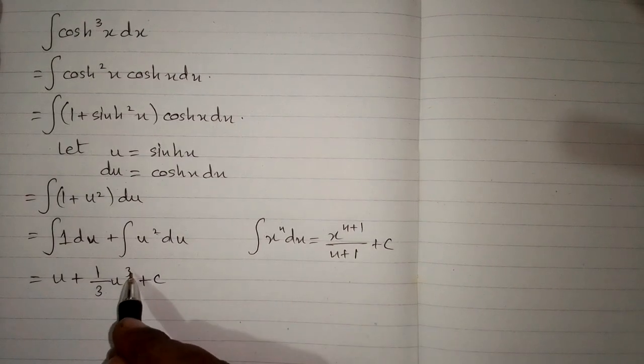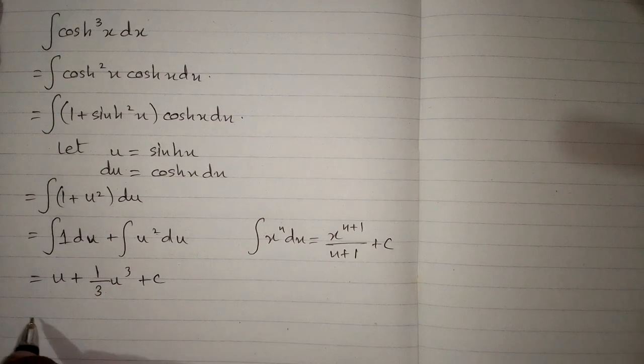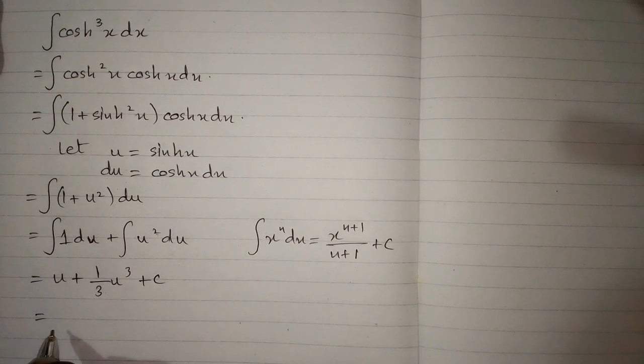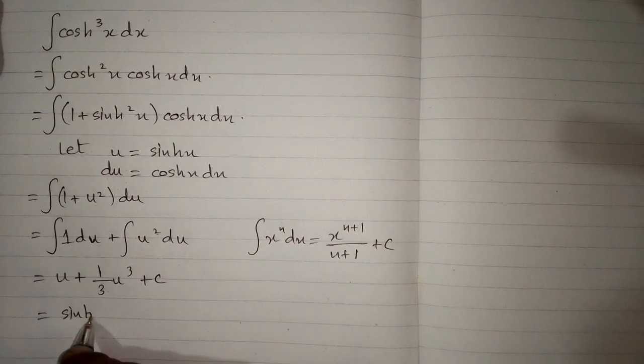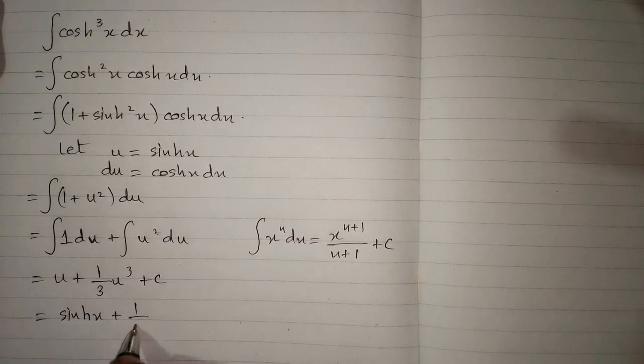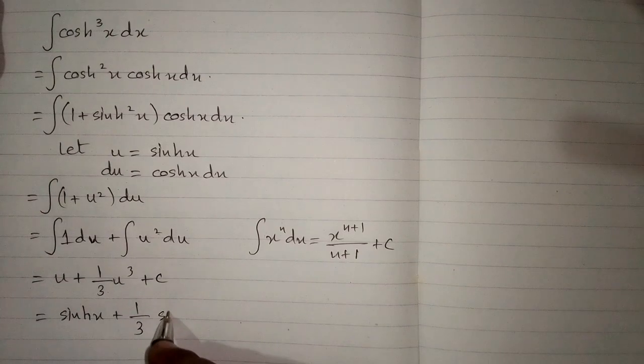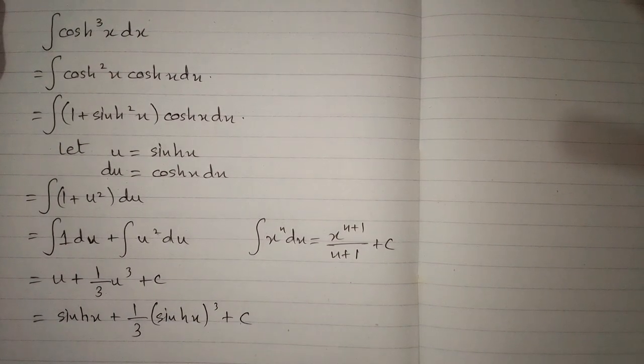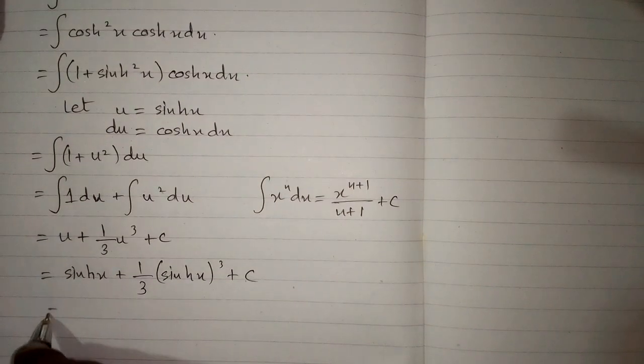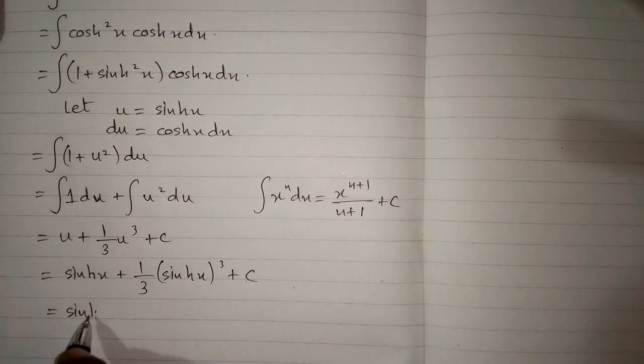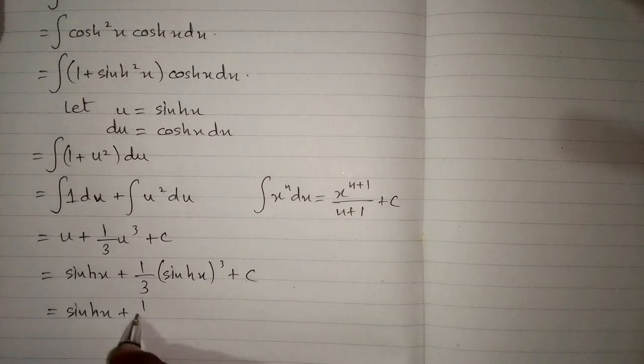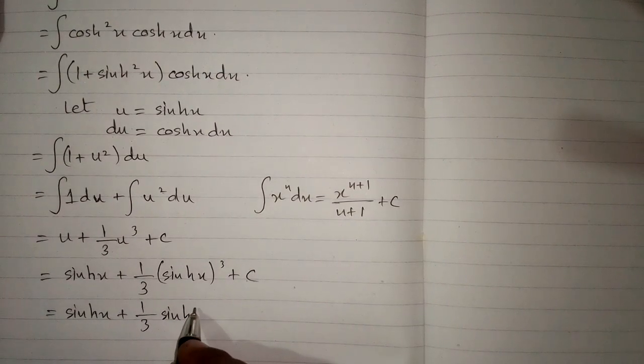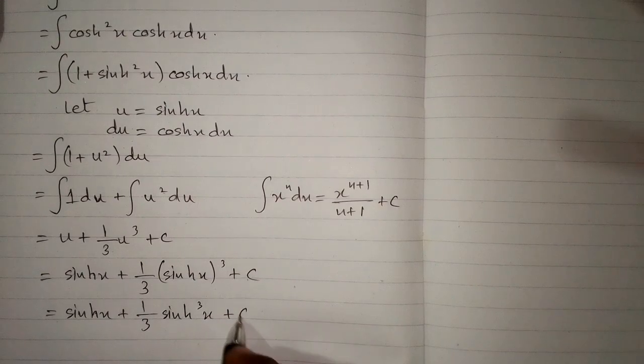Now we will put the value of u, which is hyperbolic sin x. The final answer will be hyperbolic sin x plus 1 upon 3 hyperbolic sin cube x plus c, where c is the constant of integration.